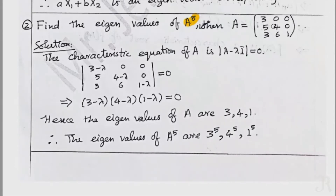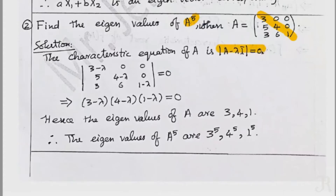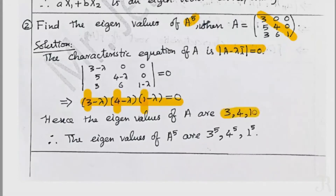Now consider the matrix A with entries 3, 0, 0 on the first row; 5, 4, 1 on the second; and 3, 6, 1 on the third. To find the eigenvalues, we write the characteristic equation: determinant of (A minus lambda I) equals zero. The roots of this equation give eigenvalues. So the eigenvalues are 3, 4, and 1.